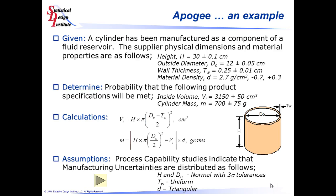For this example, we're going to be examining the design for a cylinder that has been or will be manufactured as a component of a fluid reservoir. In this design, we have a cylinder with a defined height, outside diameter, wall thickness, and material density. Our objective is to determine how well this design, based on the chosen dimensions and tolerances, will meet our performance specifications for inside volume and cylinder mass. We have an inside volume requirement of 3,150 plus or minus 50 cubic centimeters and a cylinder mass of 700 plus or minus 700 grams.